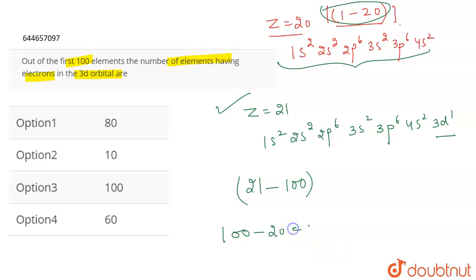So how many have it? 100 minus 20, which means that 80 elements out of these 100 have electrons in the 3D orbital. So the correct answer for this question is option 1. That's all for the question.